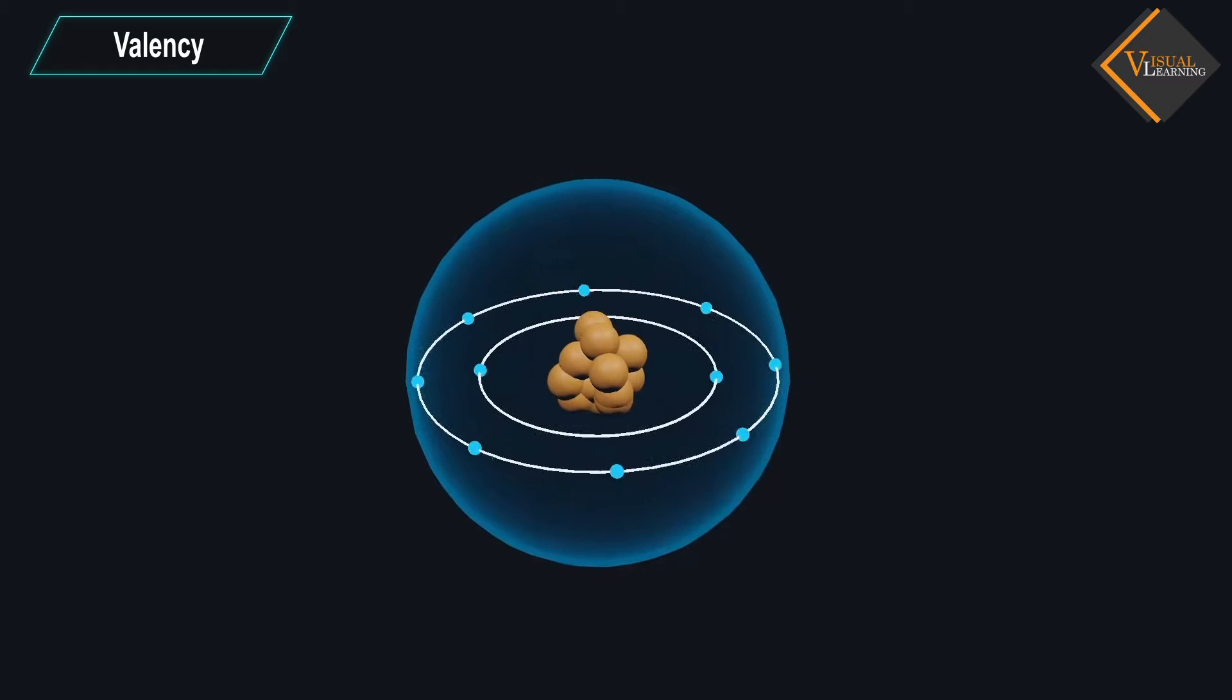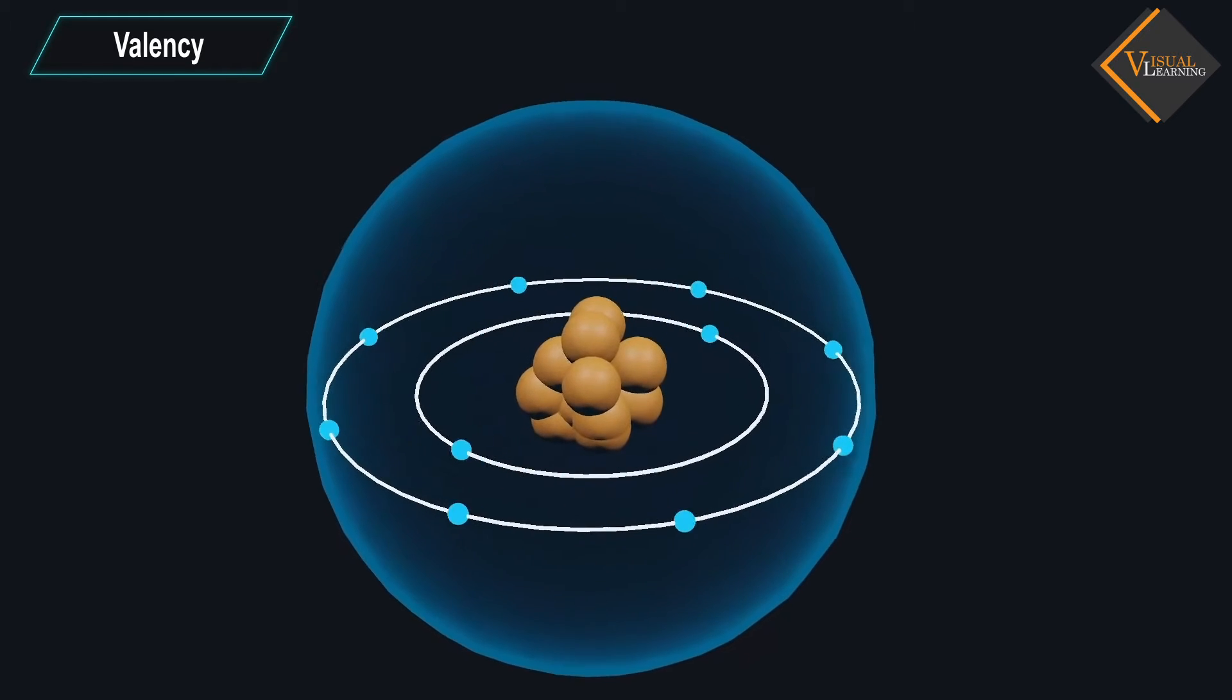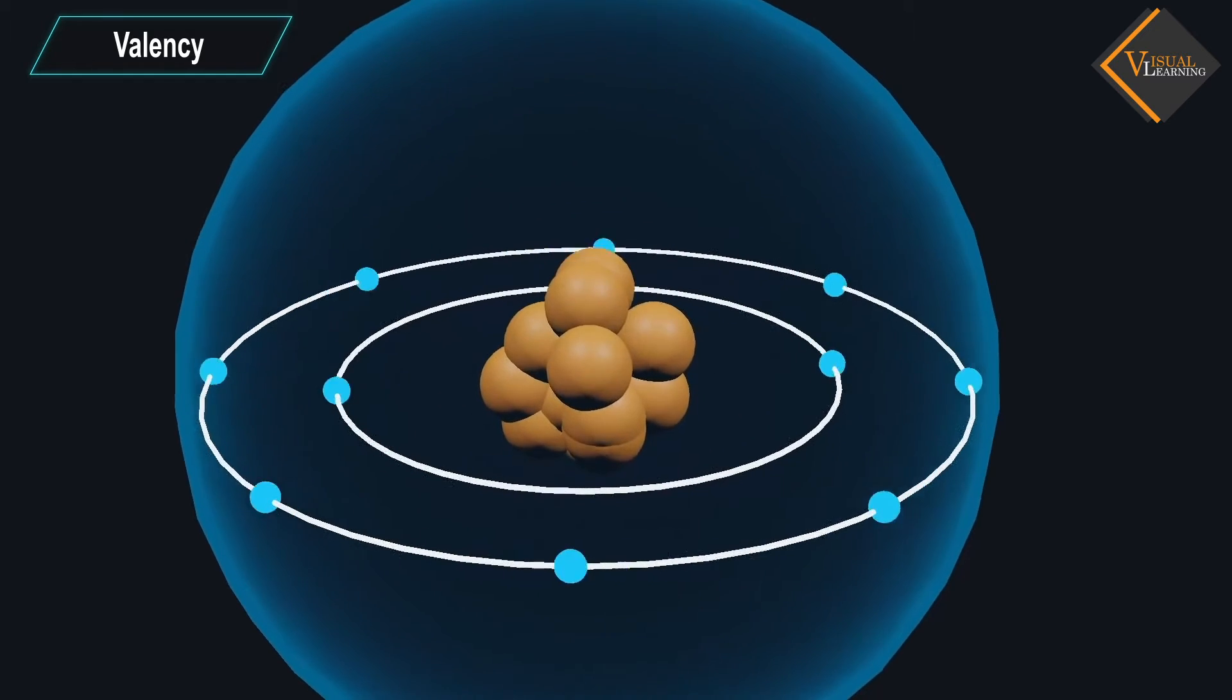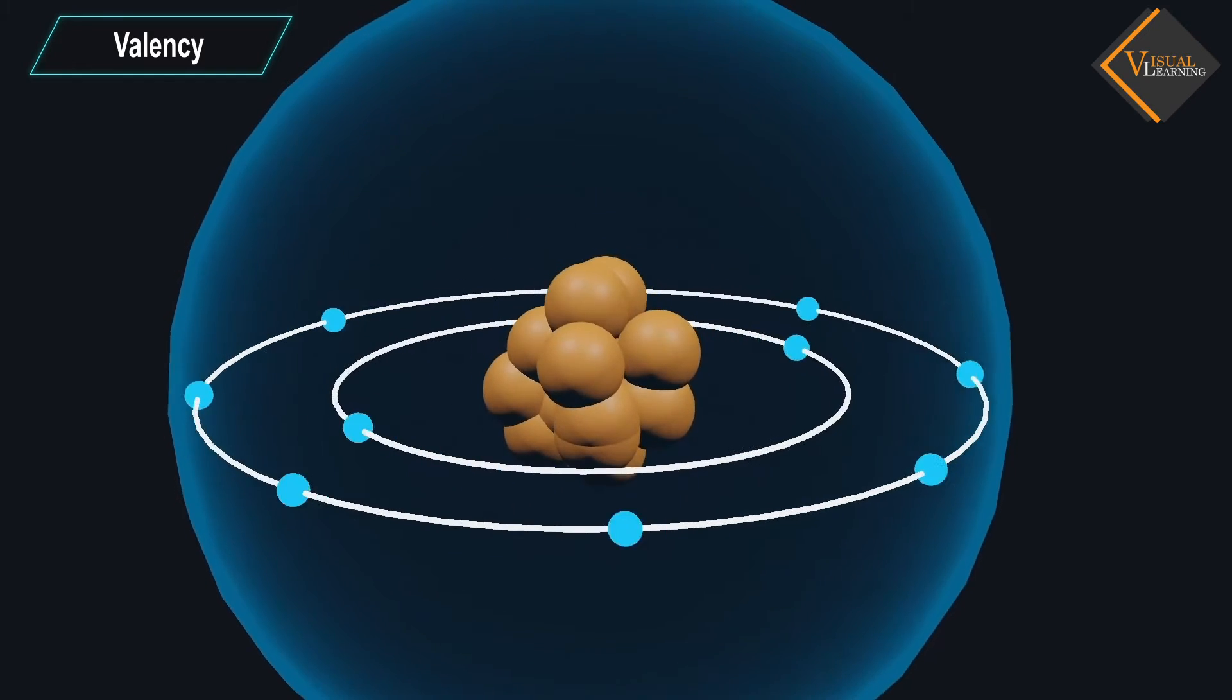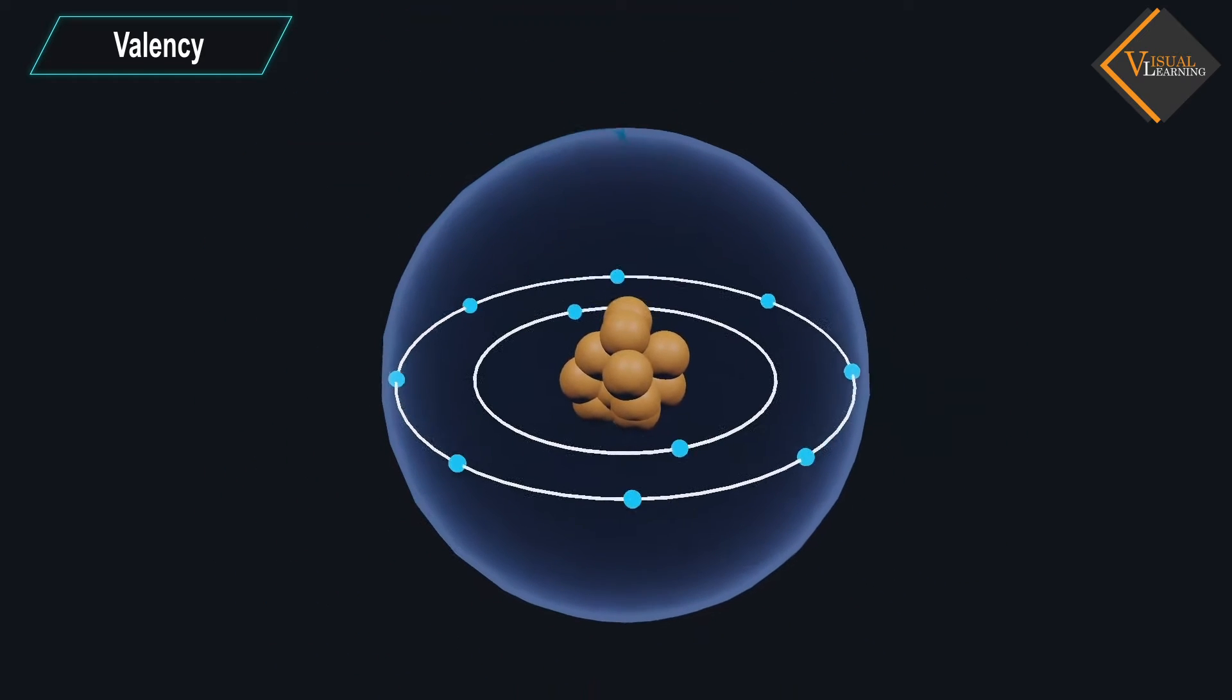It was observed that the atoms of elements completely filled with 8 electrons in the outermost shell show little chemical activity. In other words, their combining capacity or valency is zero.